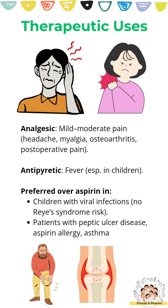Paracetamol is mainly used as an analgesic to relieve pain, and as an antipyretic to reduce fever. It is preferred over aspirin in children and in patients with asthma, because it does not cause Reye's syndrome and doesn't precipitate asthma like aspirin does.